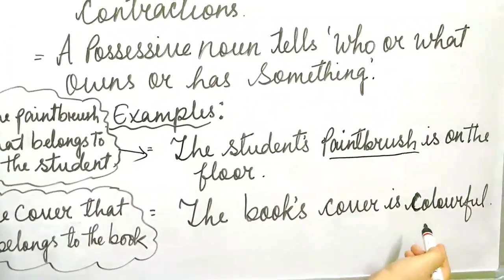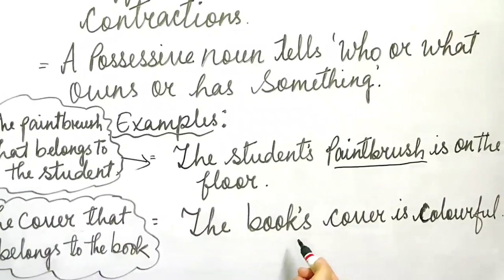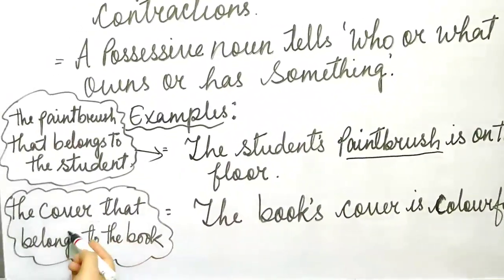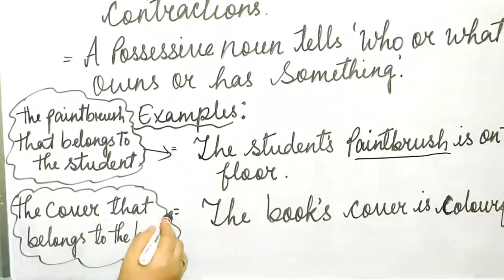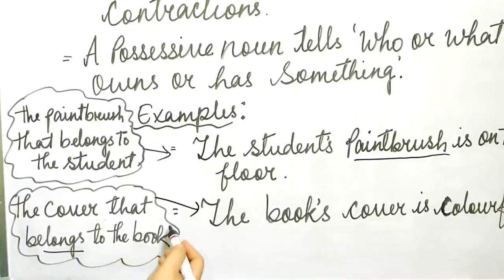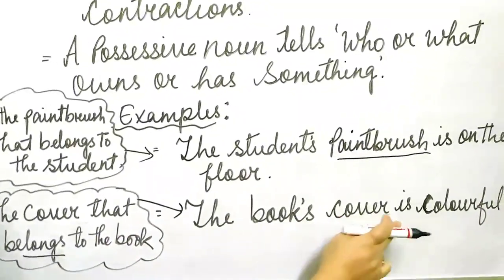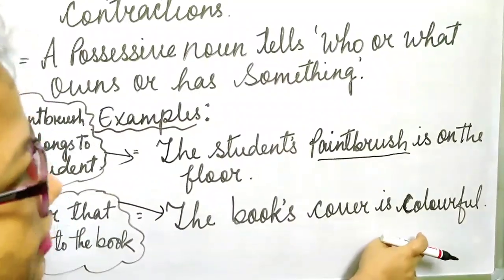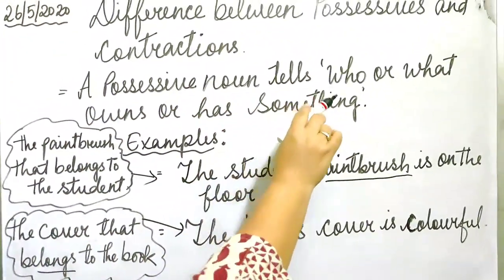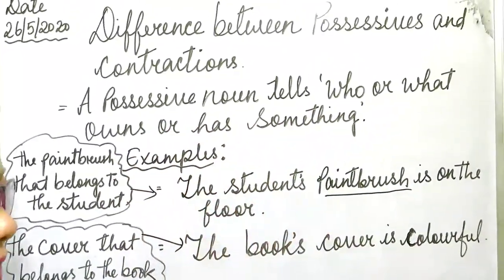Next: The book's cover is colorful. Whose cover is colorful? The book's cover is colorful. The cover belongs to the book. That's why we say a possessive noun tells who or what owns or has something.